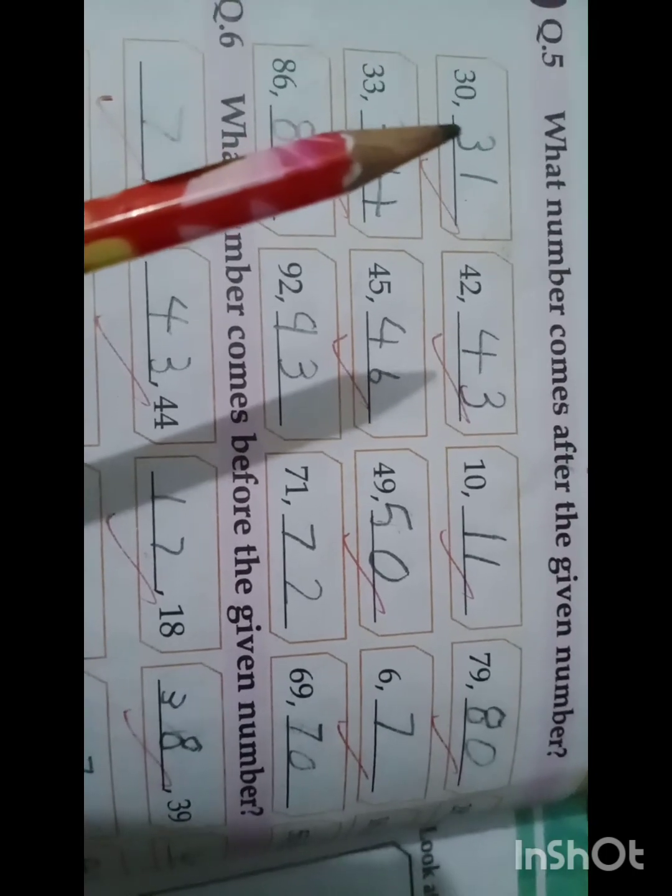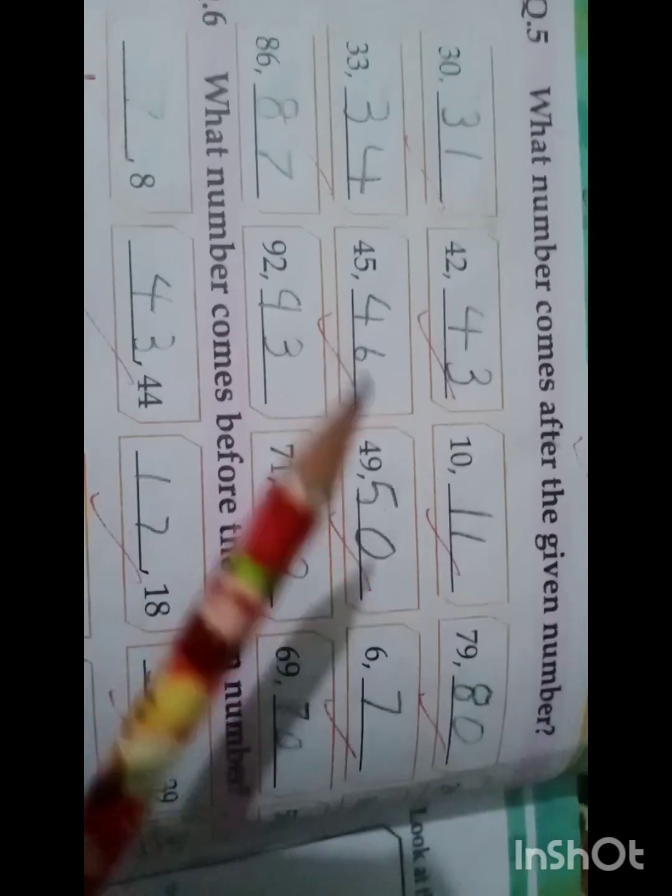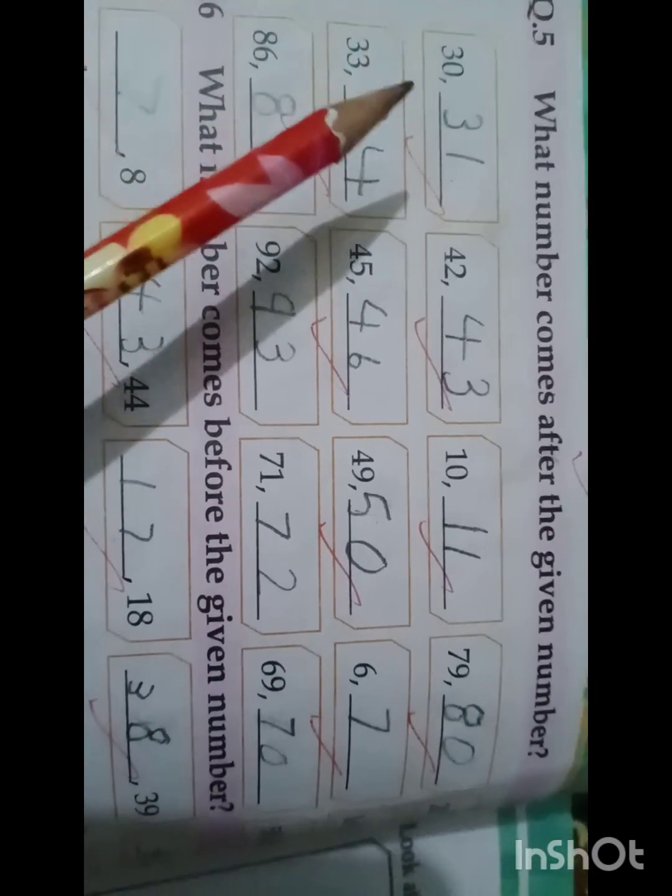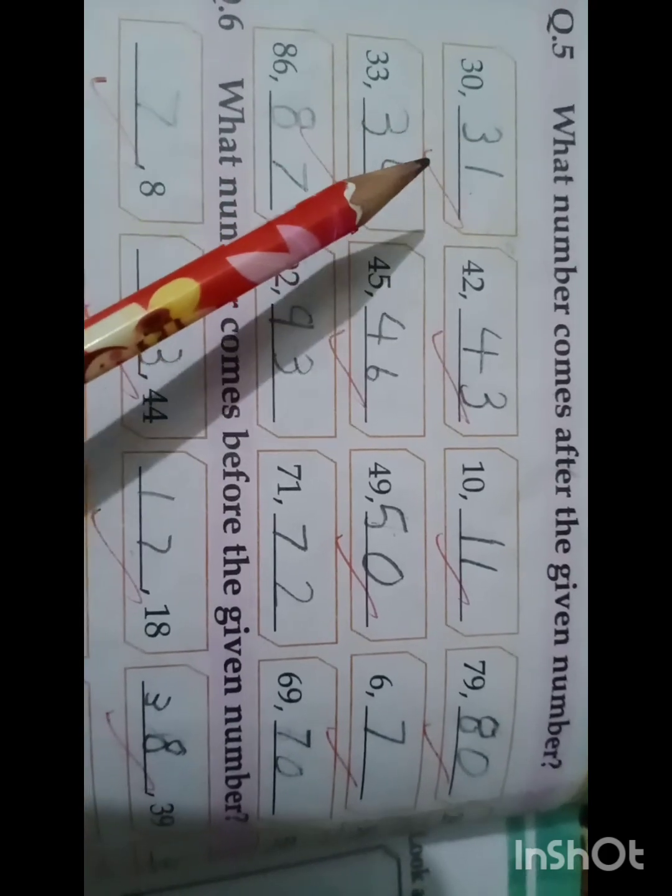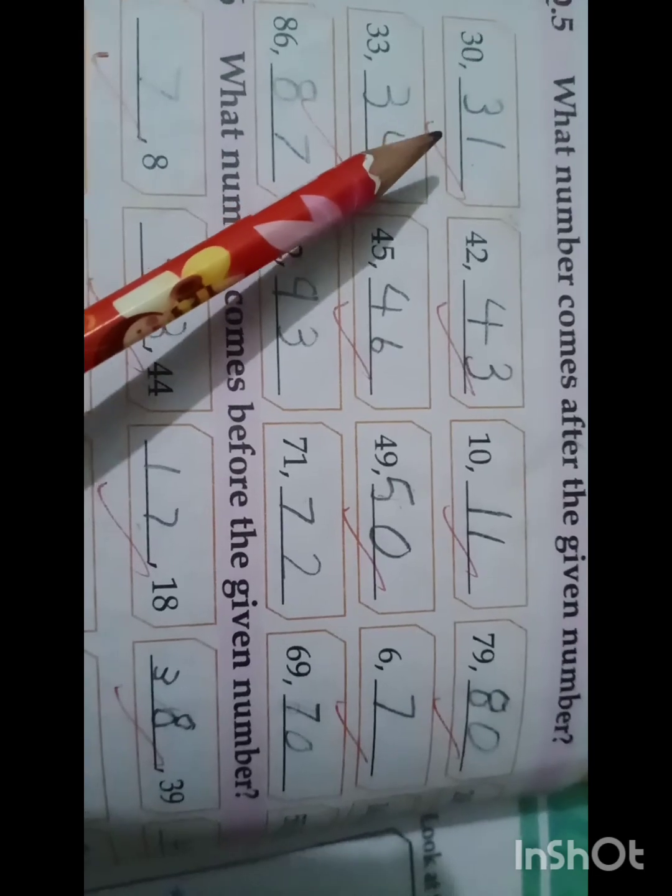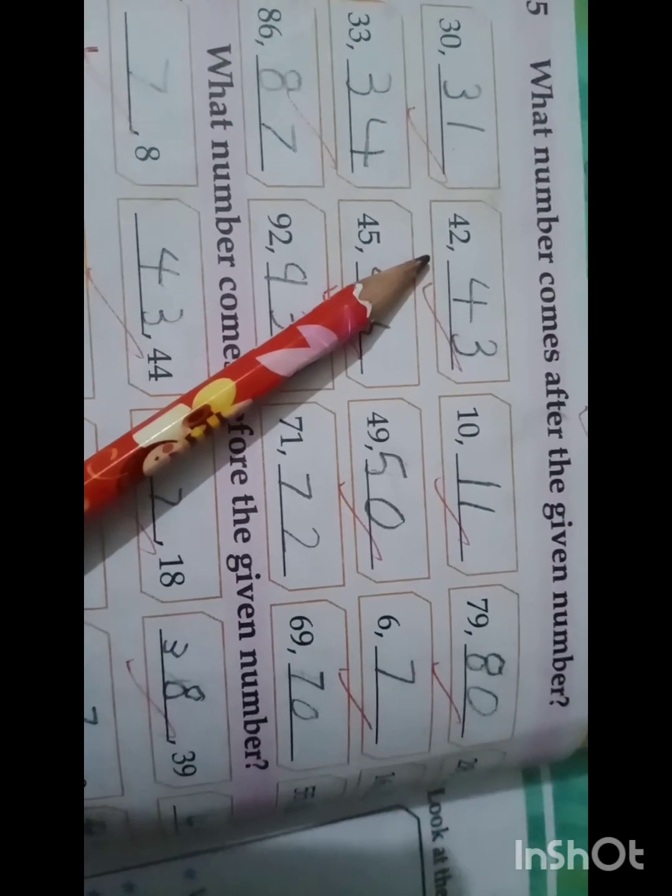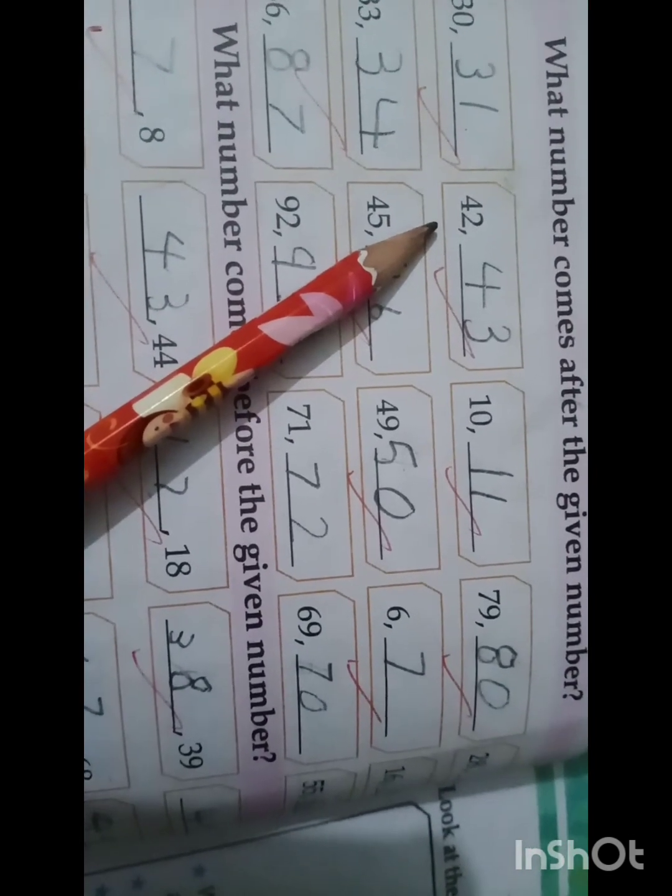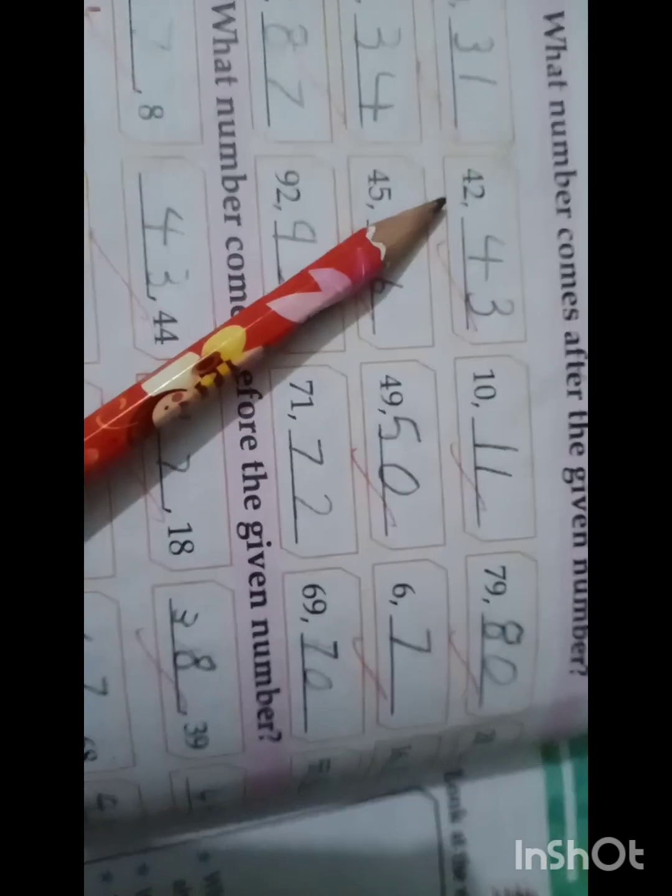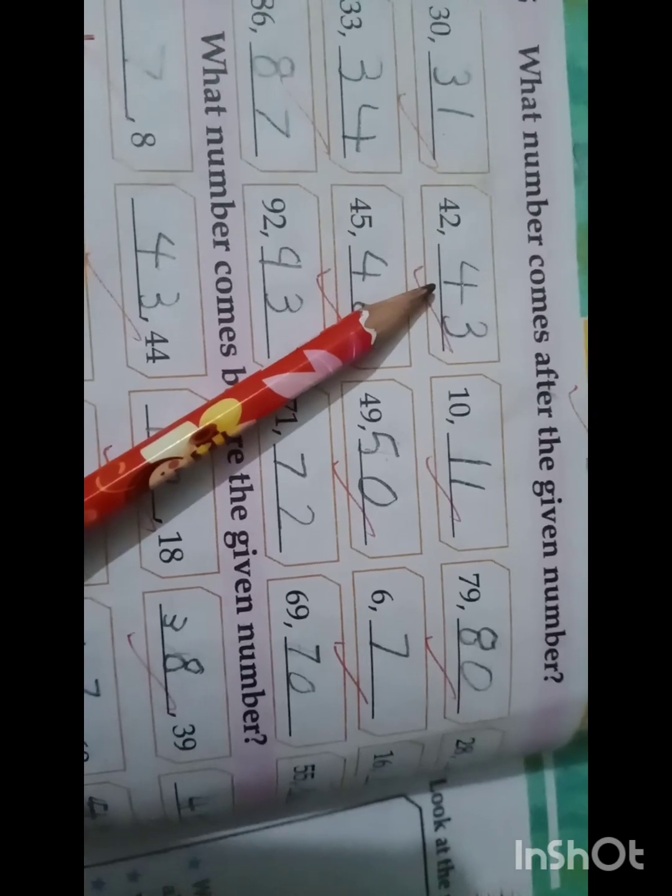Now, what comes after number 30? Very good, 31 comes after the number 30. The second one is 42. What comes after number 42? Well done, number 43 comes after number 42.